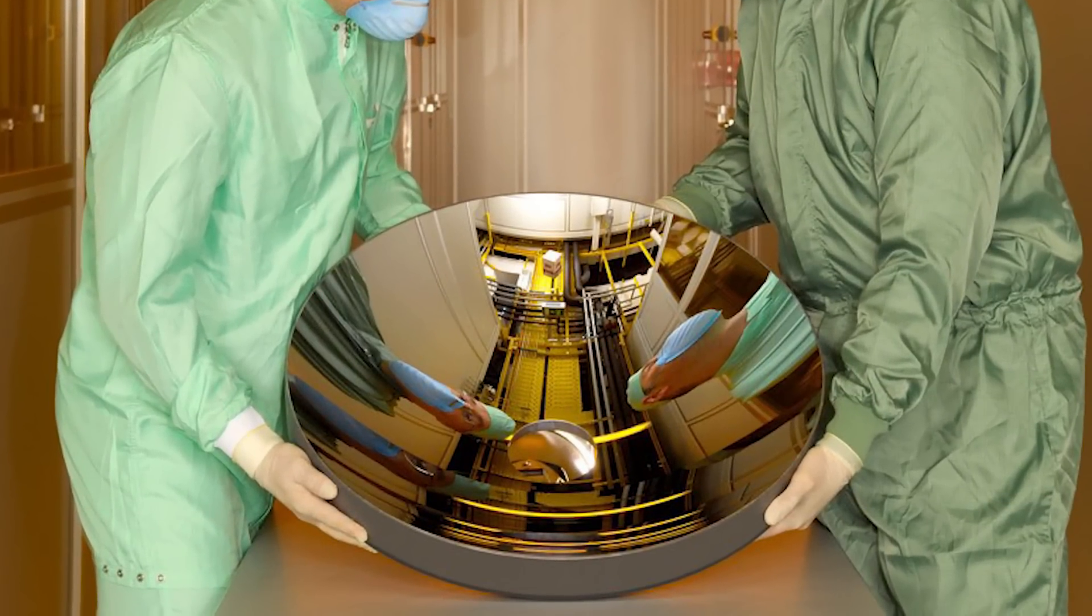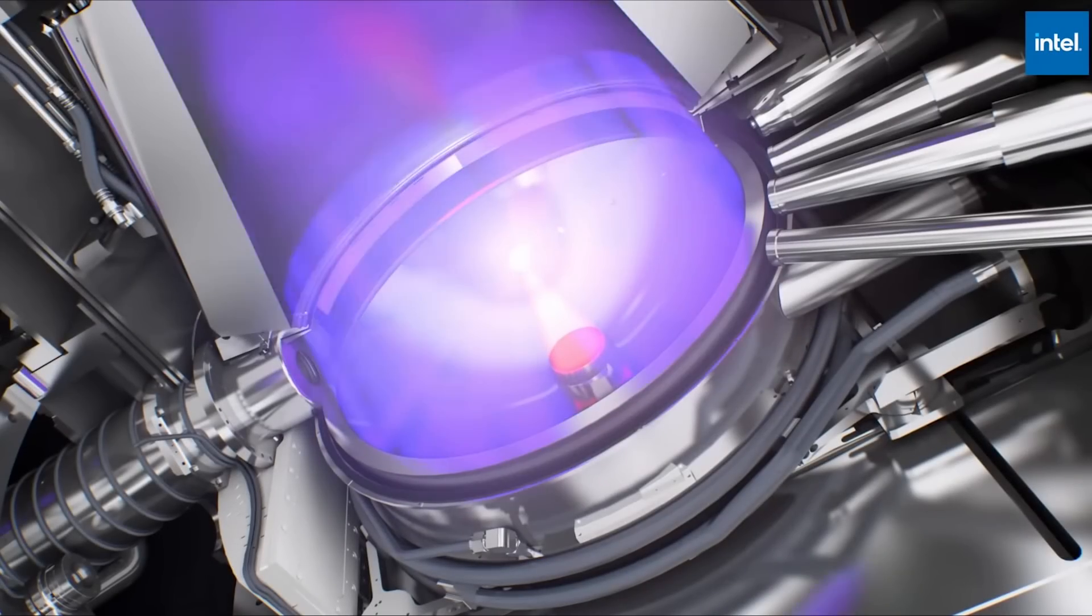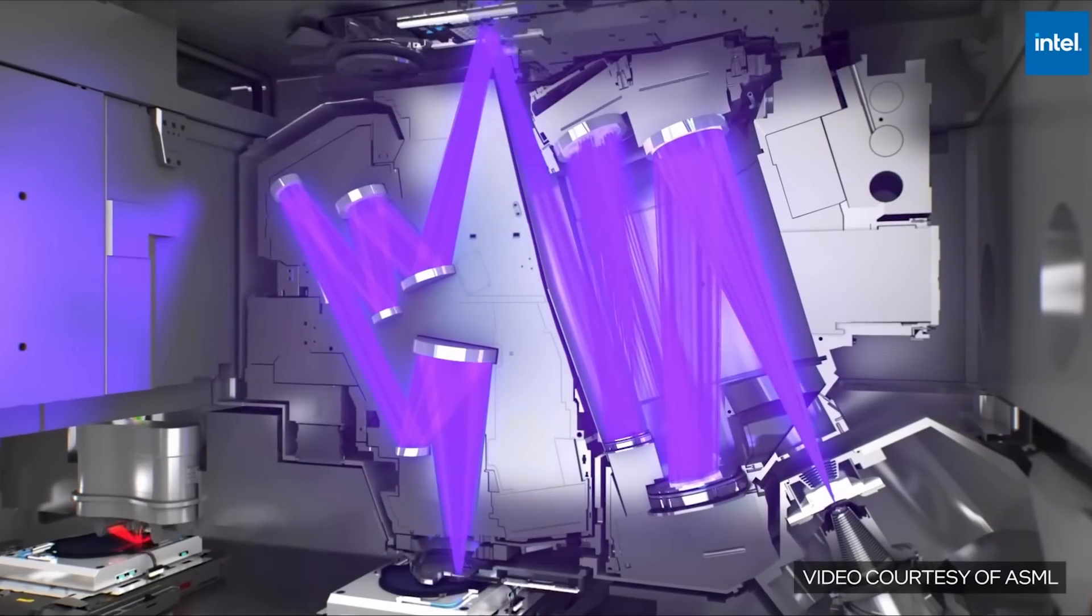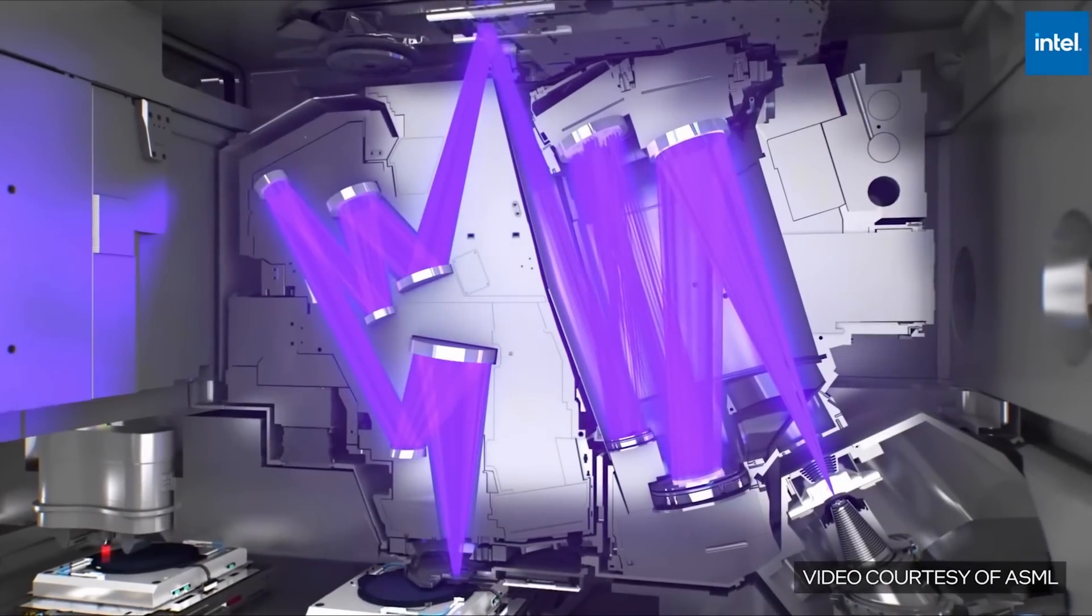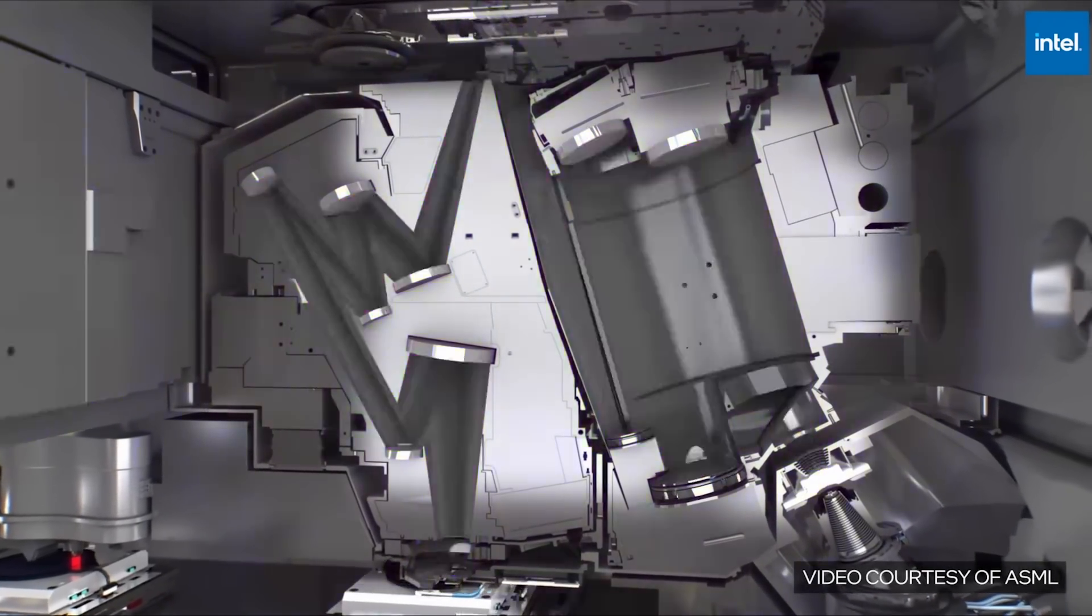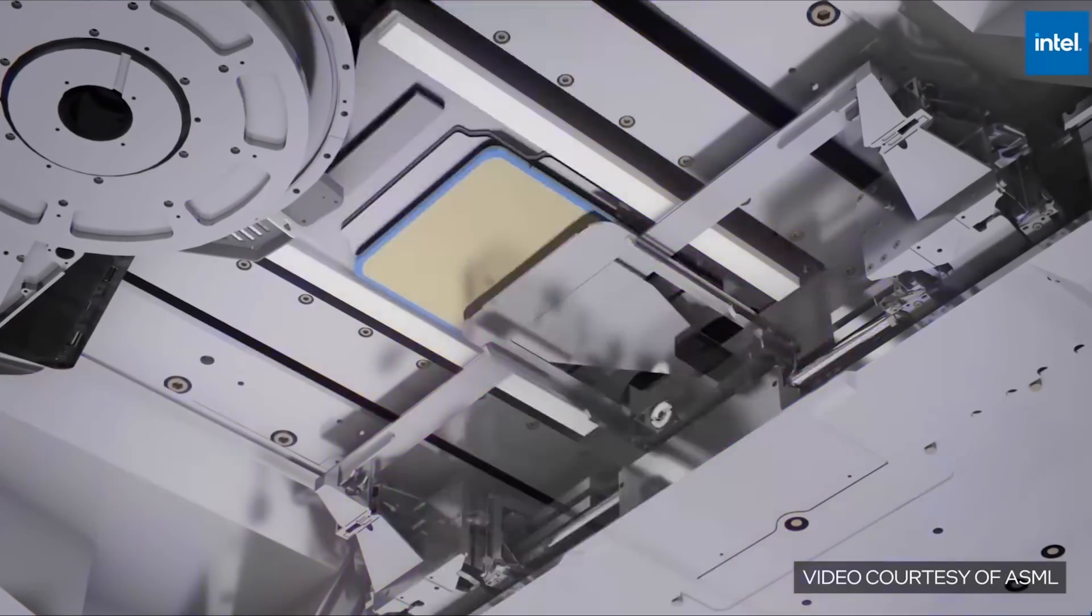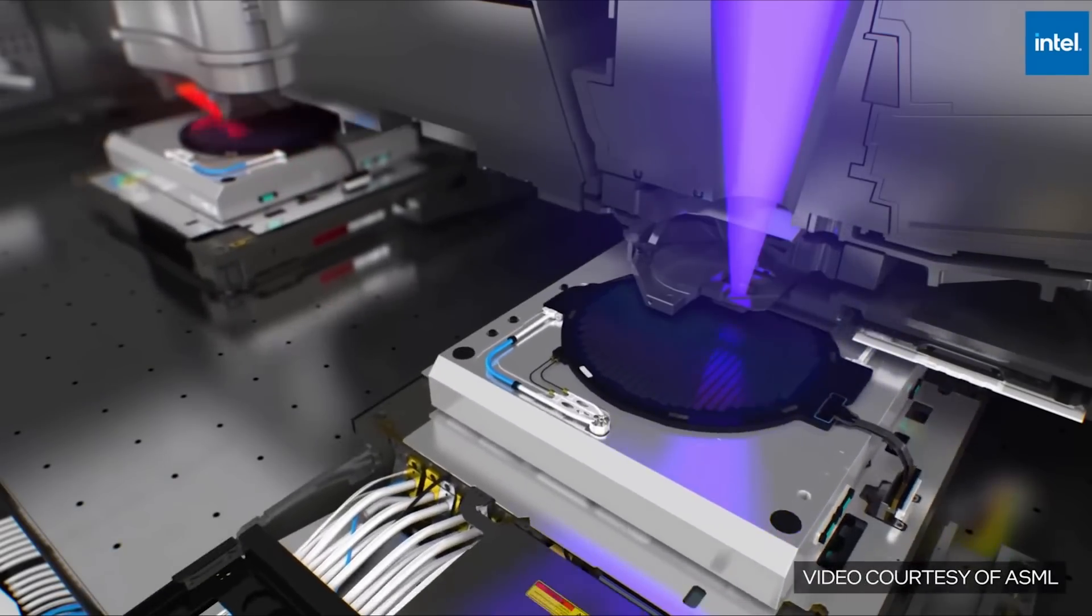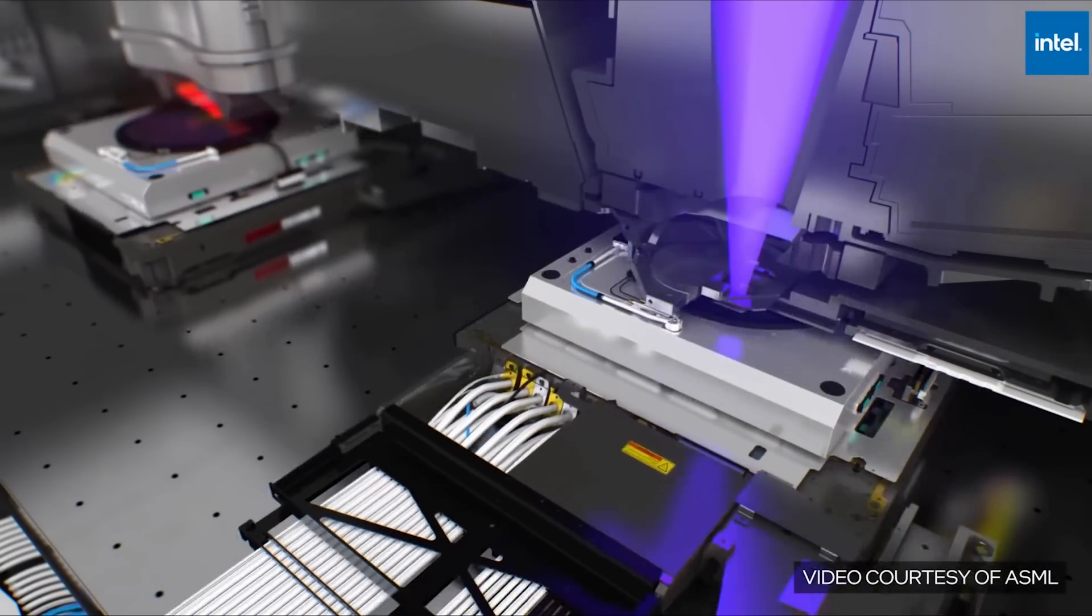To make matters worse, EUV is even absorbed by the air, so ASML needed to make the inside of the machine into a perfectly sealed vacuum. And the most difficult part is yet to come. You need to generate EUV light reliably. Before ASML came along, nobody was sure how to do that.